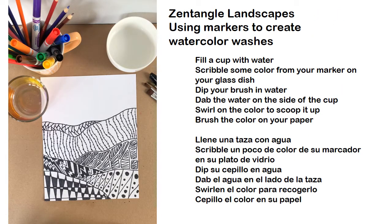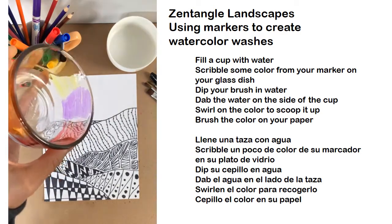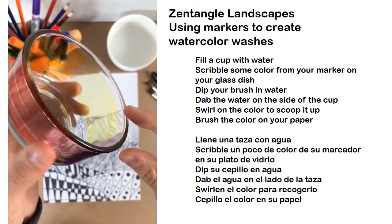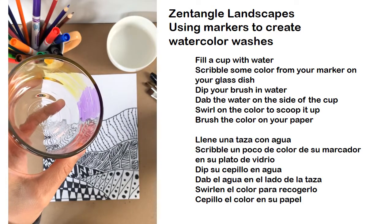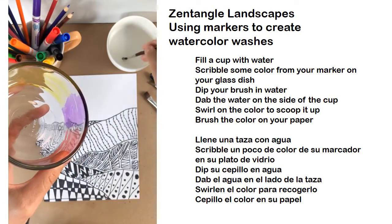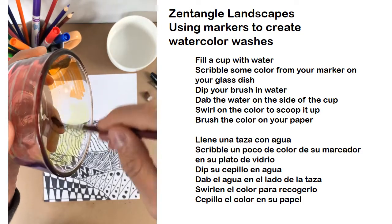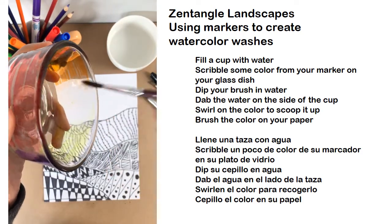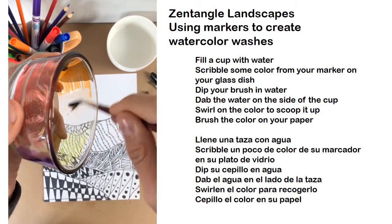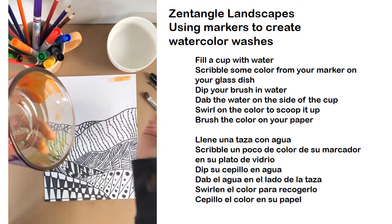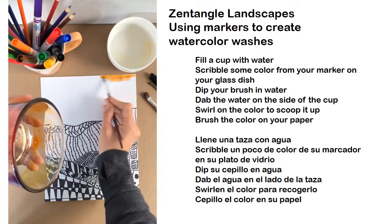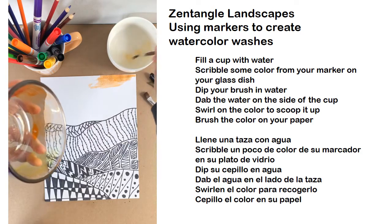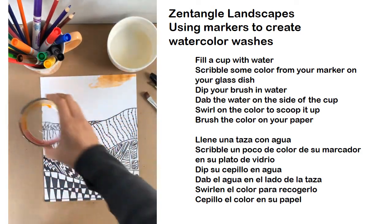If you want to use color pencils, markers, whatever you'd like to color these, you may. I want to show you if you want to use markers to make watercolor — you can color on the inside of a dish like this glass dish here. I used red, orange, yellow, maybe a little bit of purple. You can then dip a brush in a little bit of water and pick up that color, and use this to paint like watercolor just like we do in class. So if you're thinking you don't have any paint at home — if you have markers, you totally do. You're welcome to use paint or anything else that works for you for painting your Zentangle landscape.